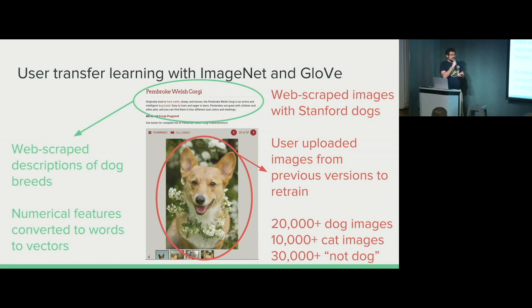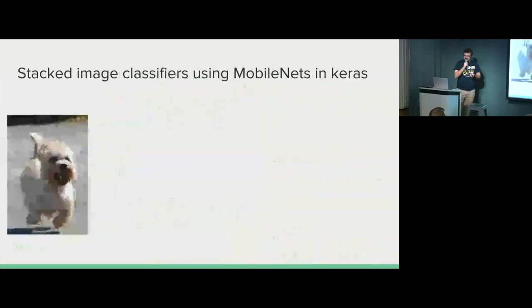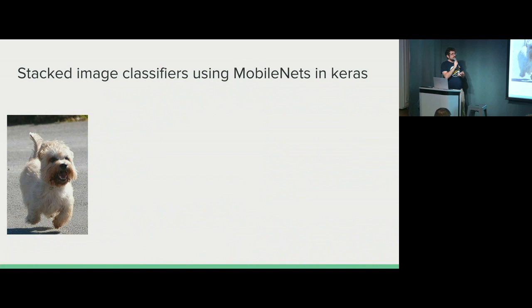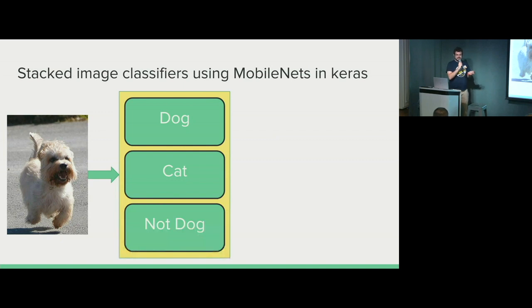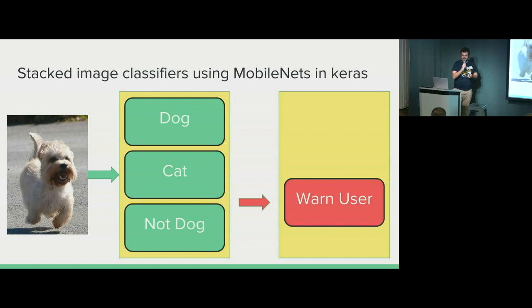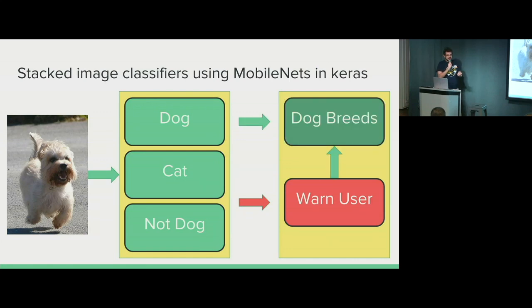The images I used include about 20,000 dog images, 10,000 cat images, and 30,000 not-dog images. That final class was especially important because my friends like to upload photos like this. In order to classify the dog breeds in the images and whether they were dogs, I used stacked image classifiers using MobileNets and Keras. You can just initialize a MobileNet in Keras and it will download the ImageNet weights so you can train from there — it usually only takes a few hours on a GPU instance to train. So you take your image and classify it into dog, cat, or not-dog. If a person uploads an image of a cat or not-dog, it warns the user and then still recommends dog breeds anyway, because they're probably just having fun.